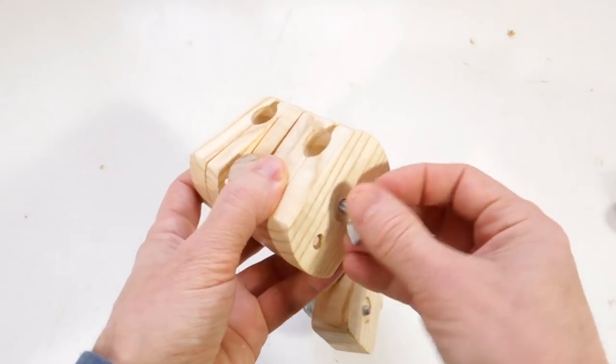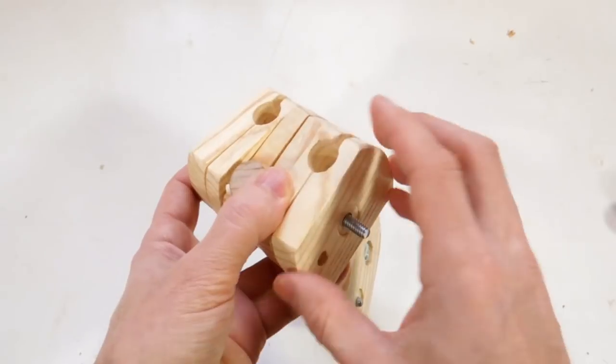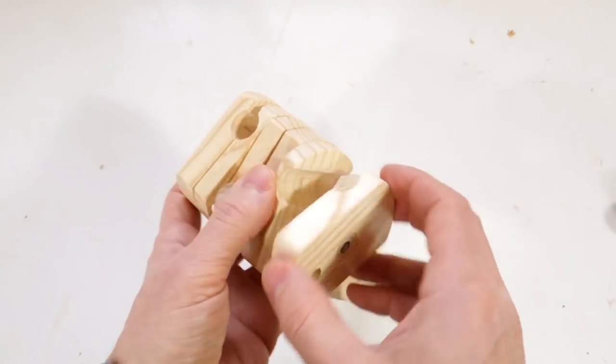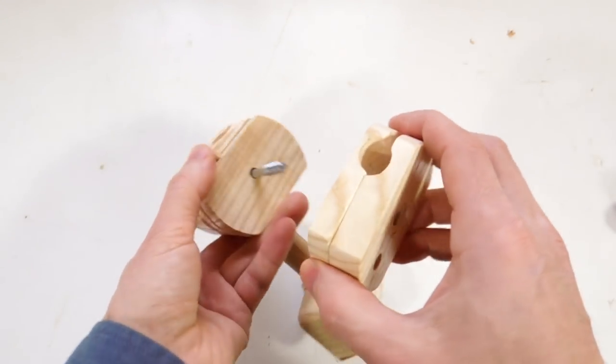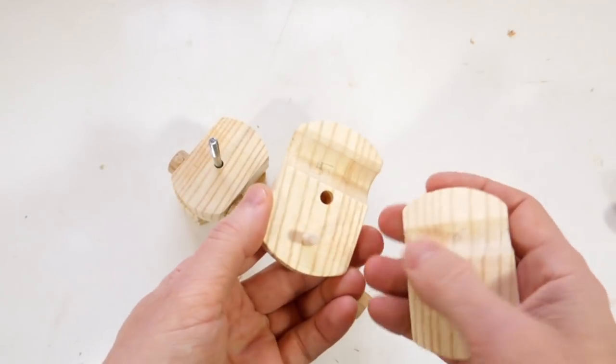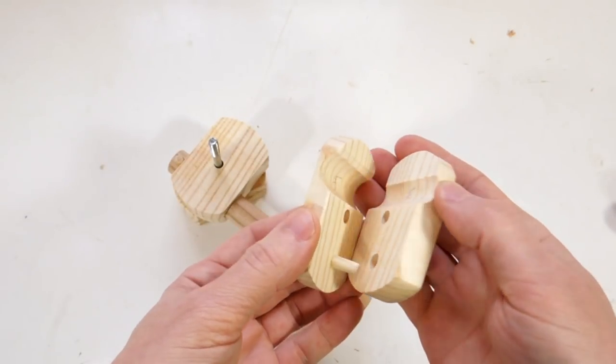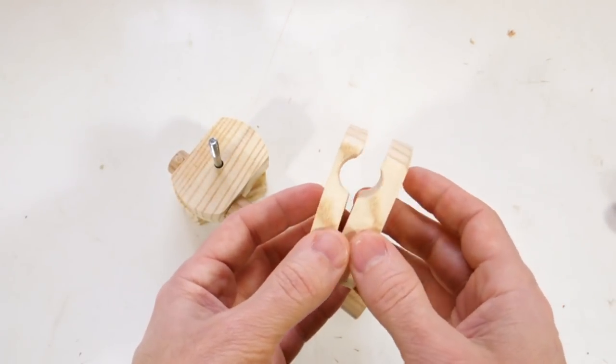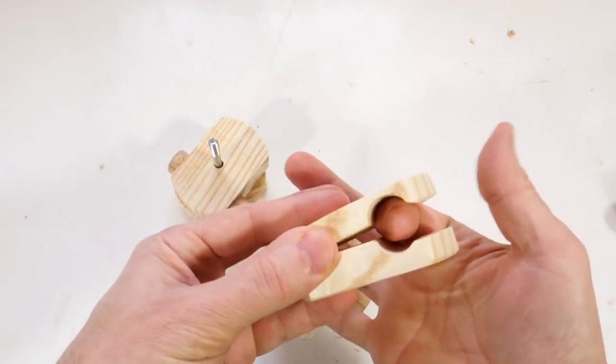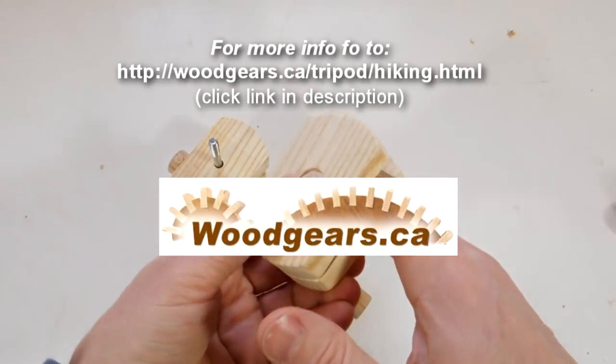And while I was fiddling with it, sometimes these layers would get misaligned and I'd have to fiddle with them to get them back aligned. So what I did is I put a pin through here. And that keeps these two halves aligned, so when I put this around the ski pole, I don't have to worry about these things coming out of alignment.